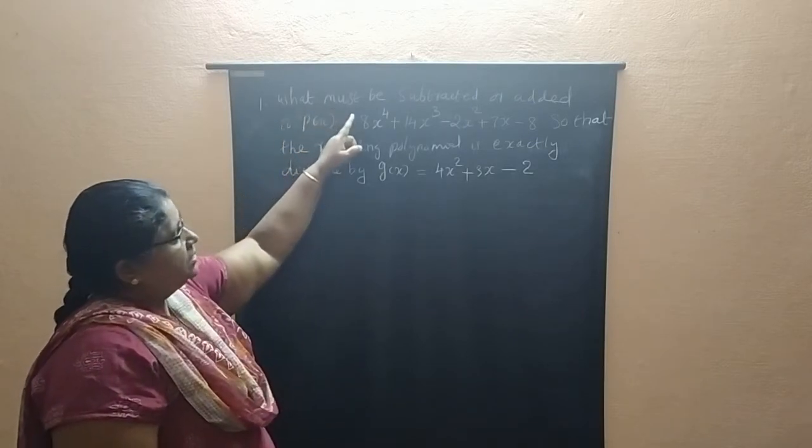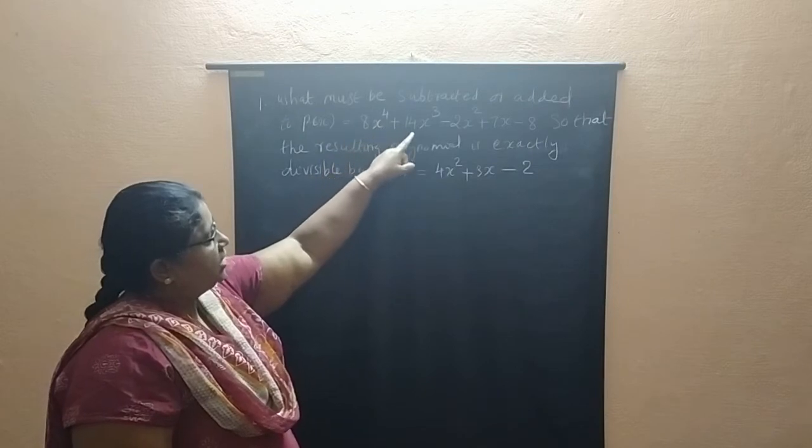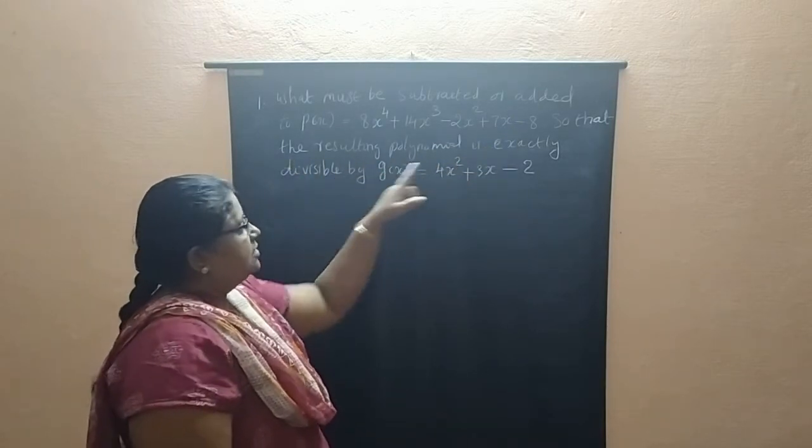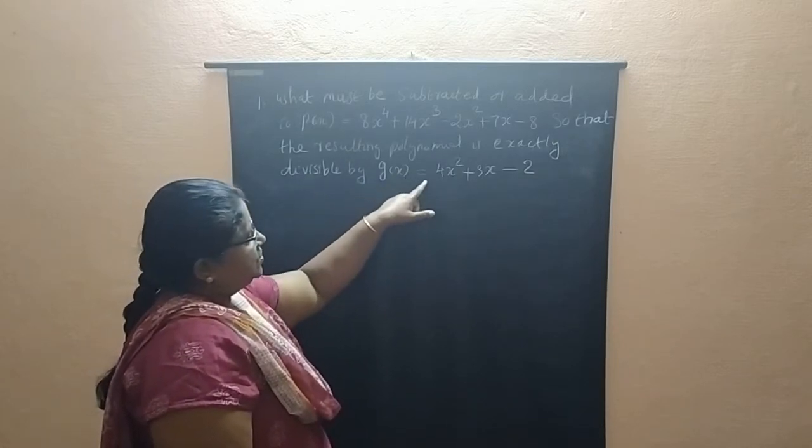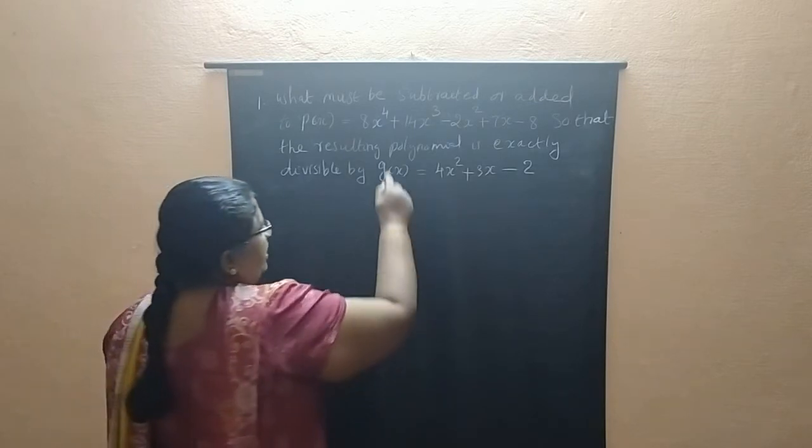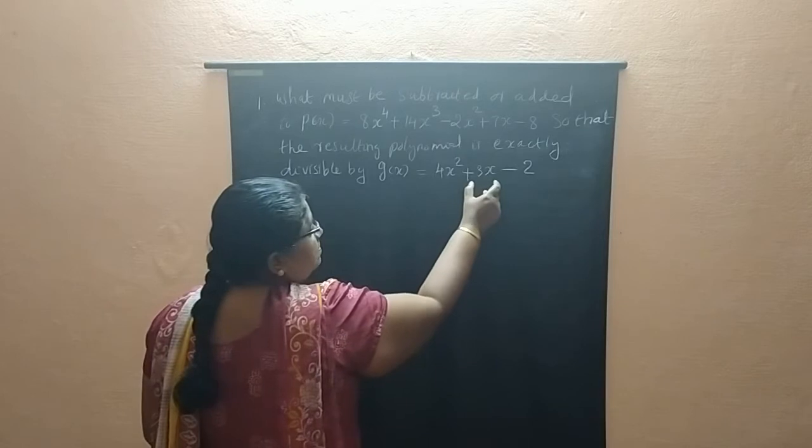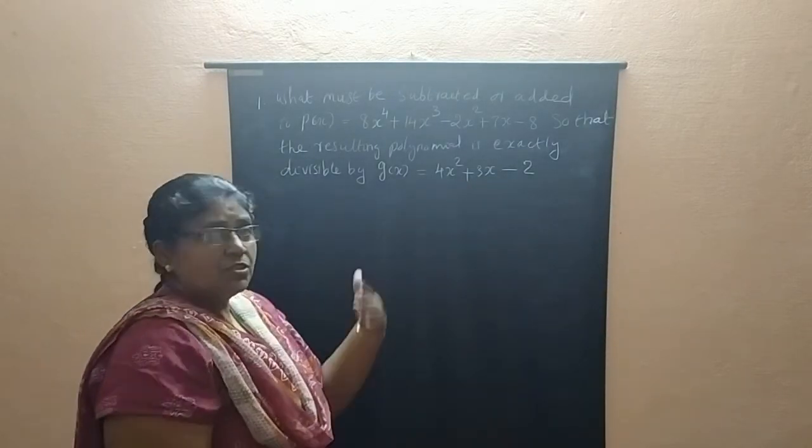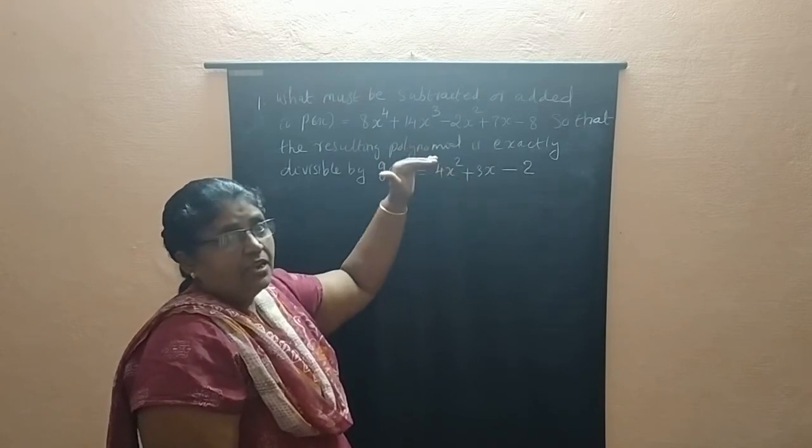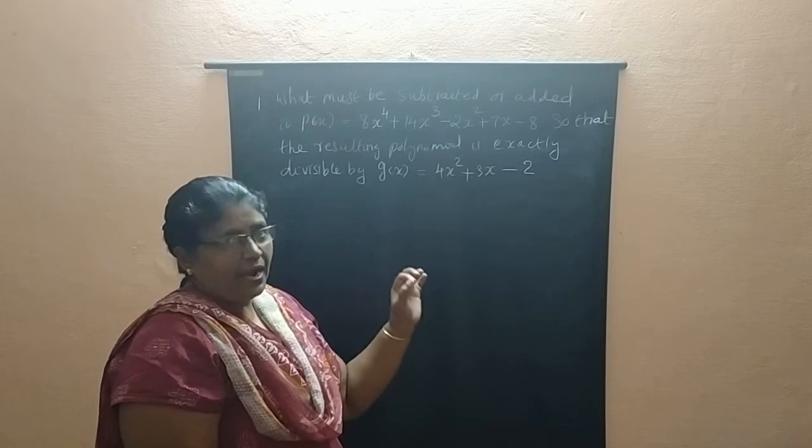What must be subtracted or added to P of X equals 8X to the power 4 plus 14X cube minus 2X square plus 7X minus 8, so that the resulting polynomial is exactly divisible by G of X equals 4X square plus 3X minus 2? Question is we have to subtract something from this polynomial then that answer will be divisible with this. Divisible means remainder will be zero. Or if we add some terms with this polynomial then we can completely divisible with this G of X. What is that to be subtracted or to be added? That is the question.